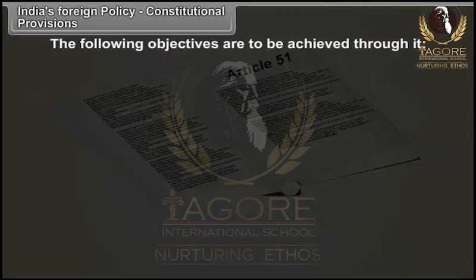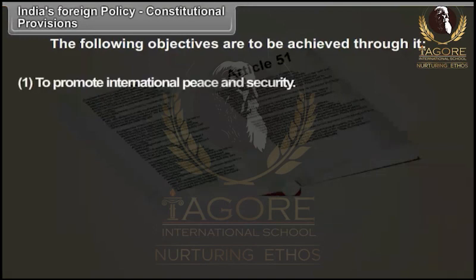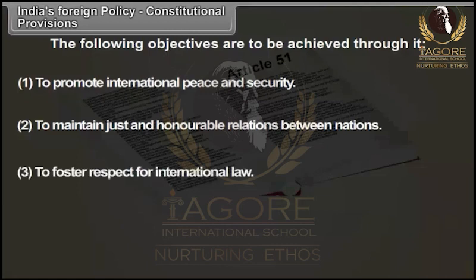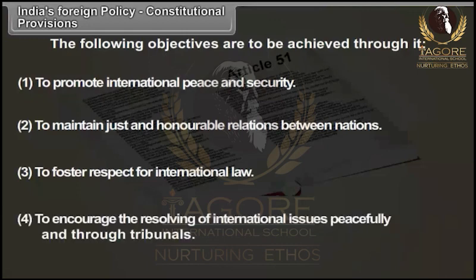The objectives under Article 51 are: 1. To promote international peace and security. 2. To maintain just and honourable relations between nations. 3. To foster respect for international law. 4. To encourage the resolving of international issues peacefully and through tribunals.